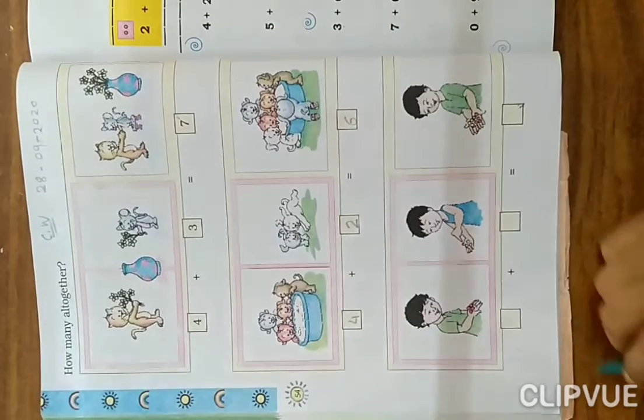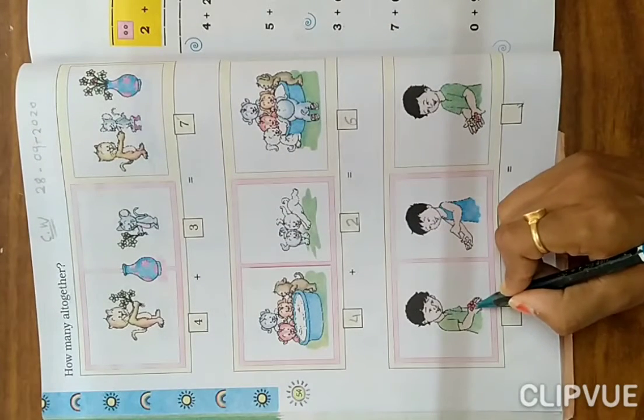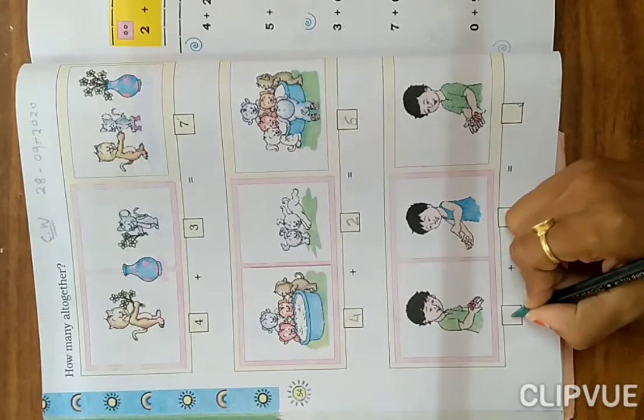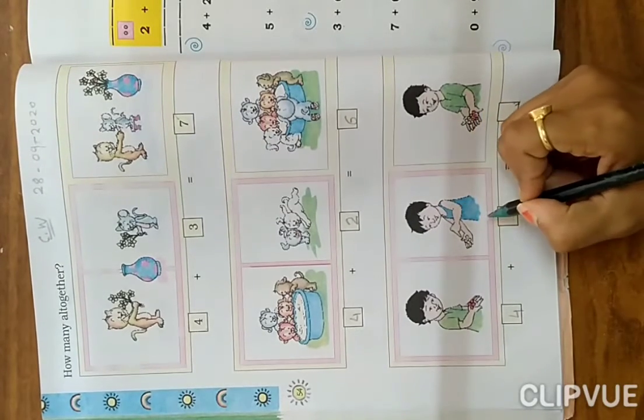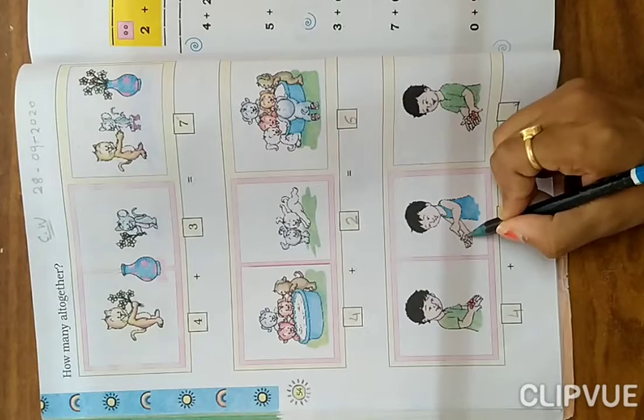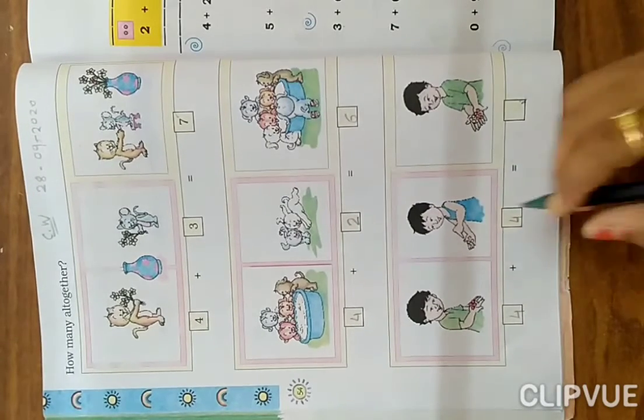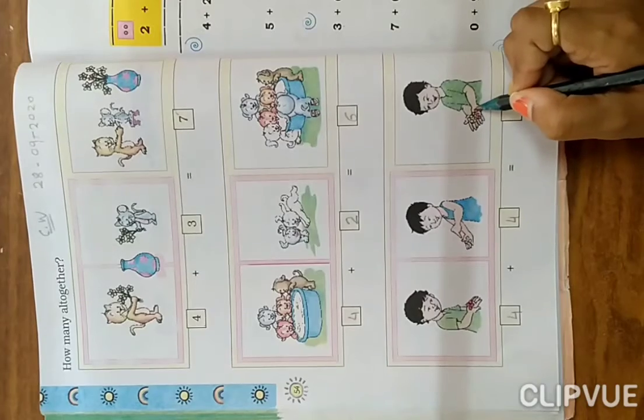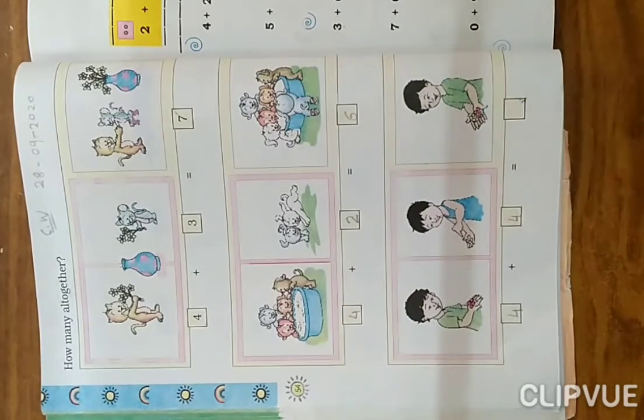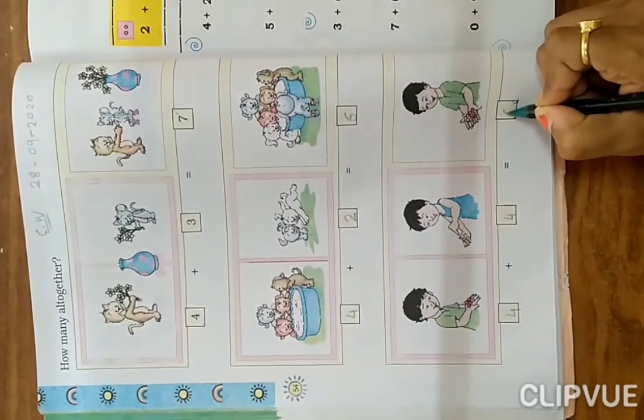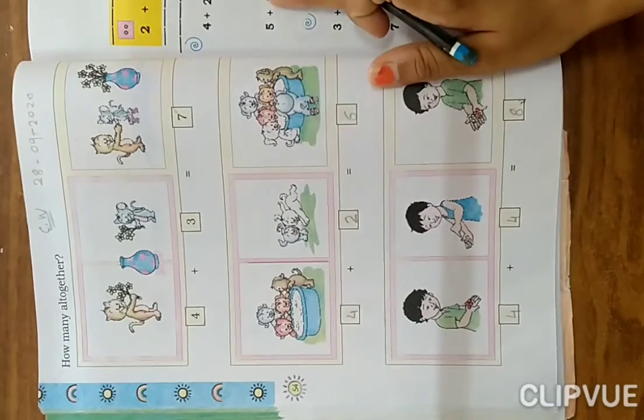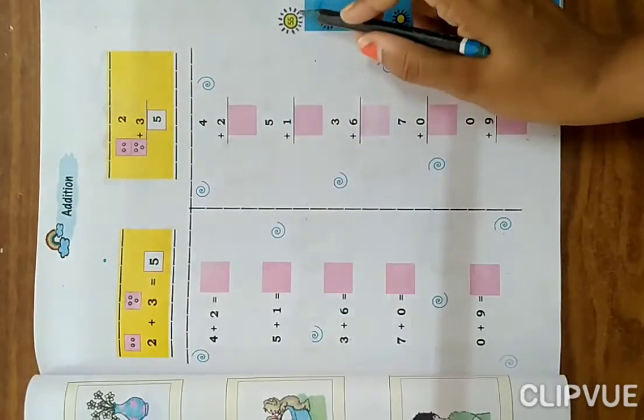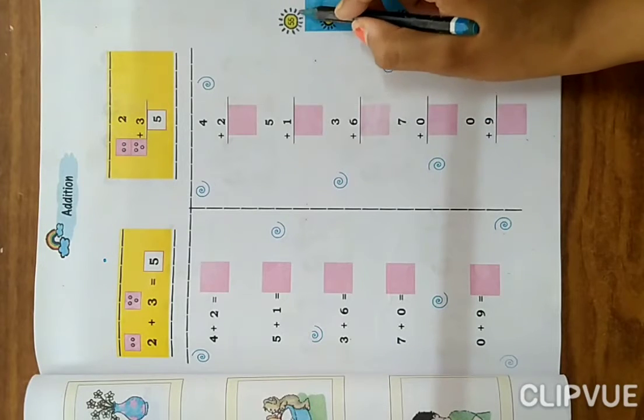Now count how many stones. One, two, three, and four, so here write down four. And in this hand, one, two, three, and four. Count all together: one, two, three, four, five, six, seven, and eight. Eight stones are here.